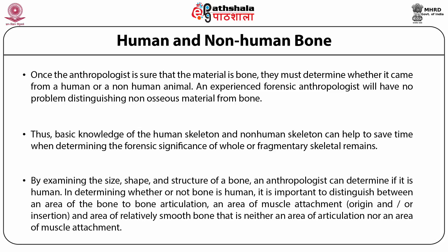By examining the size, shape, and structure of a bone, an anthropologist can determine if it is human. In determining whether bone is human, it is important to distinguish between an area of bone-to-bone articulation, an area of muscle attachment (that is, the origin or insertion), and an area of relatively smooth bone that is neither an area of articulation nor muscle attachment.